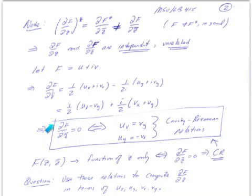If we require that capital F not depend on z-bar — that is, that F is an analytic function depending only on the combination x plus iy and in no way on x minus iy — then the real part and imaginary part of that expression must both vanish. That gives us u_x = v_y and u_y = −v_x. We've re-derived the Cauchy-Riemann relations, which are nothing other than the statement that the function is analytic — it depends only on the combination x plus iy.